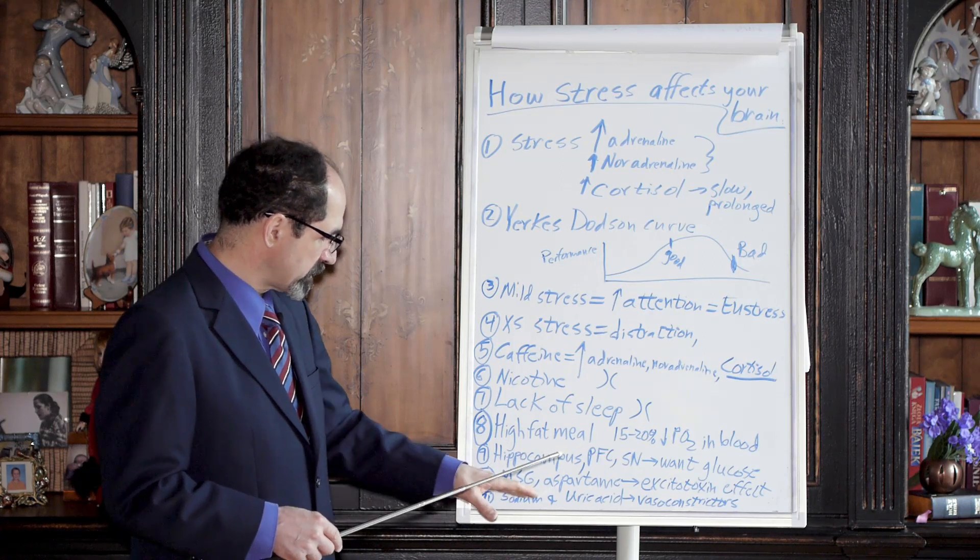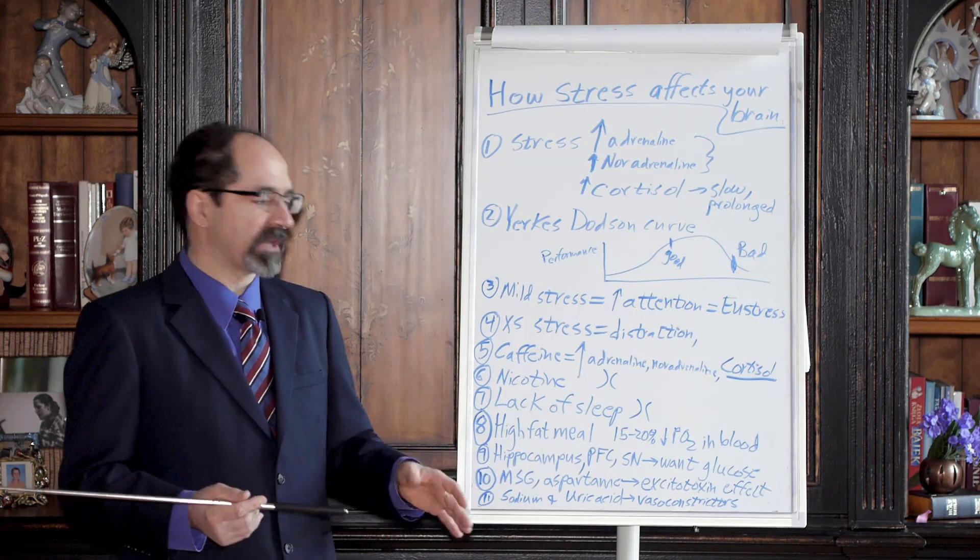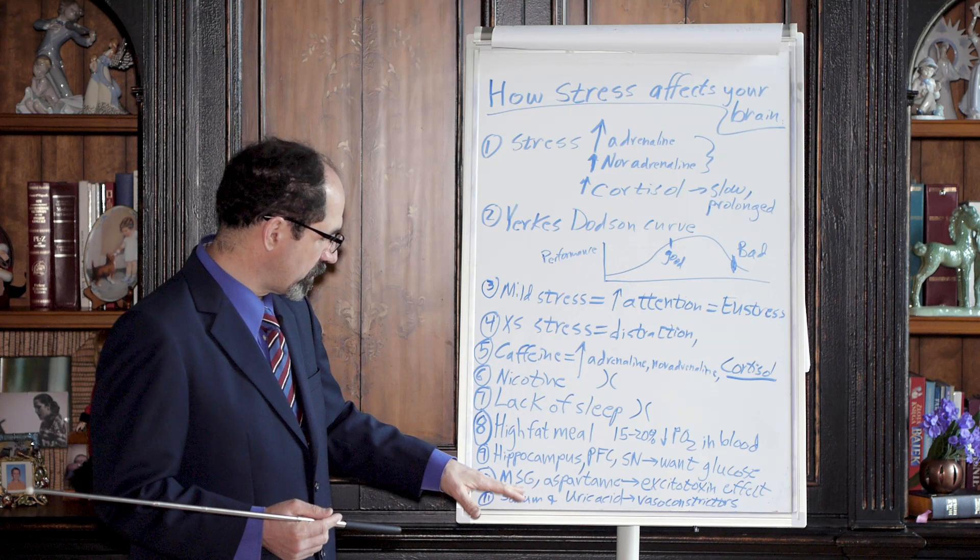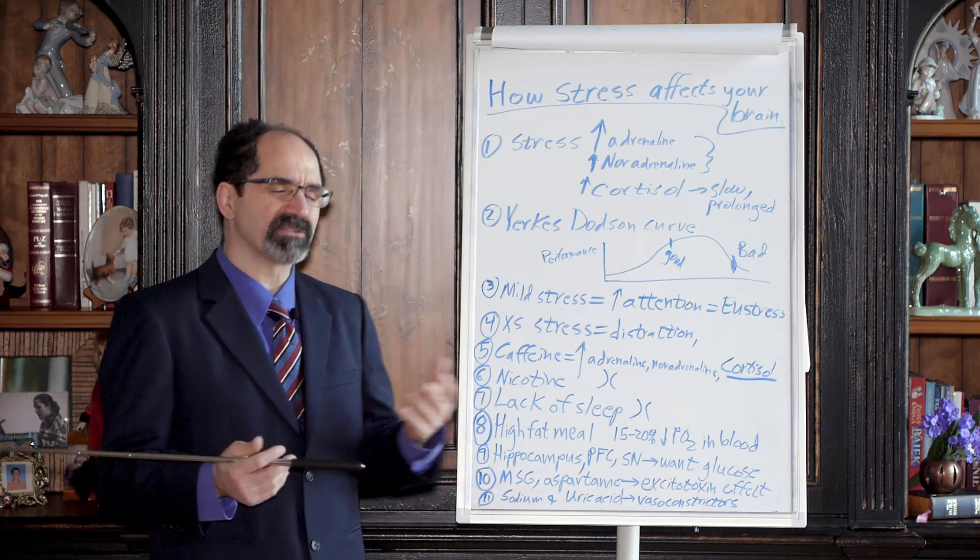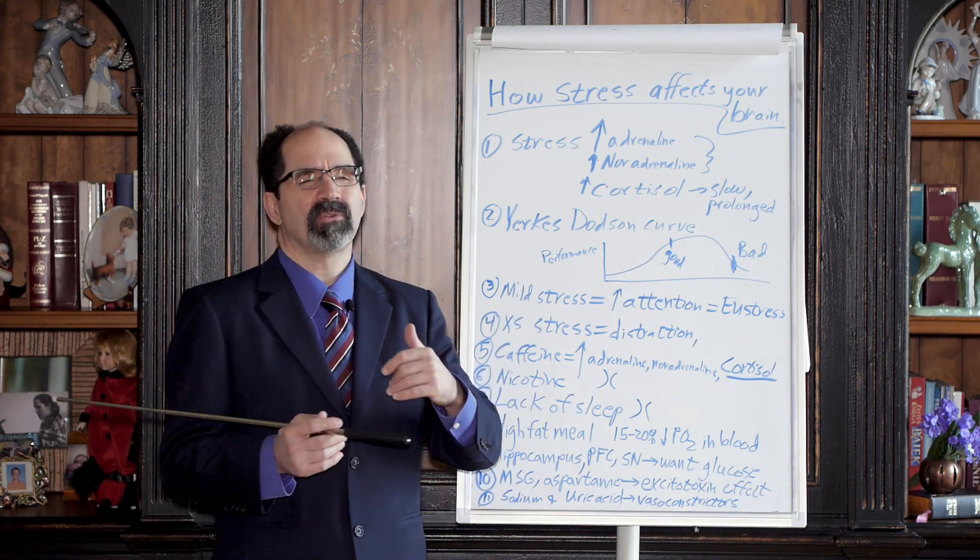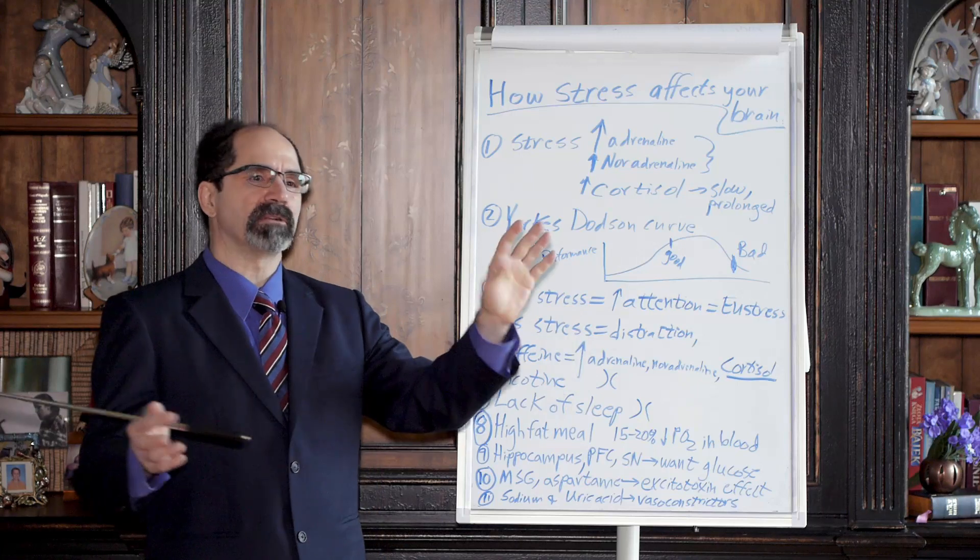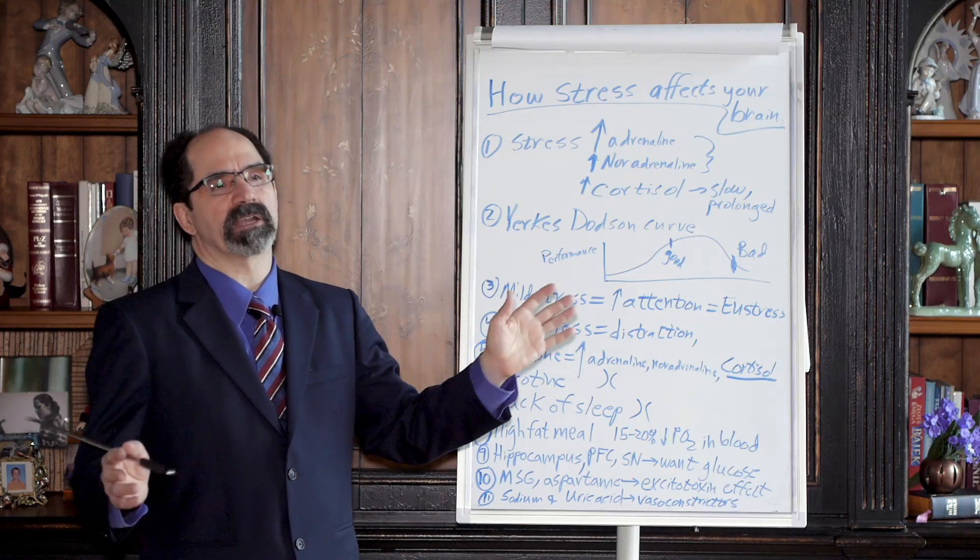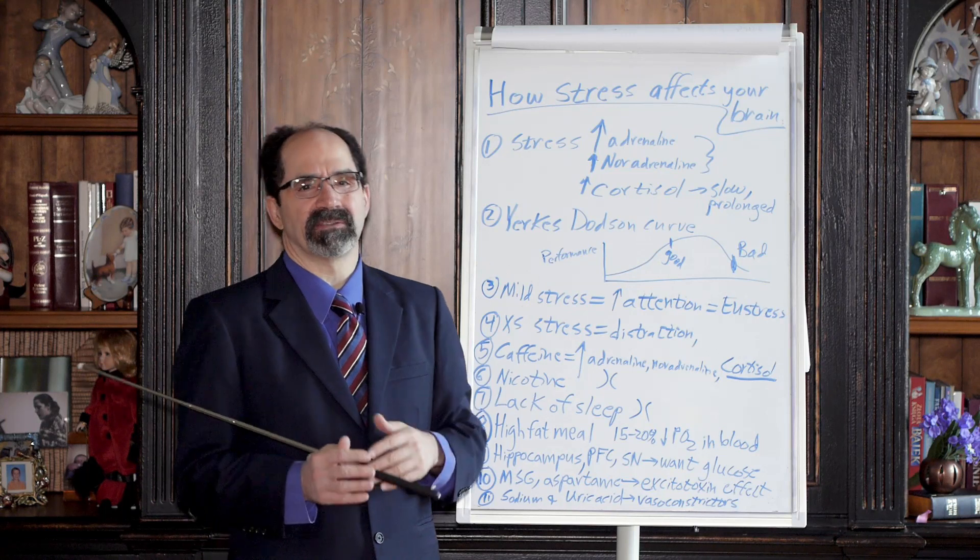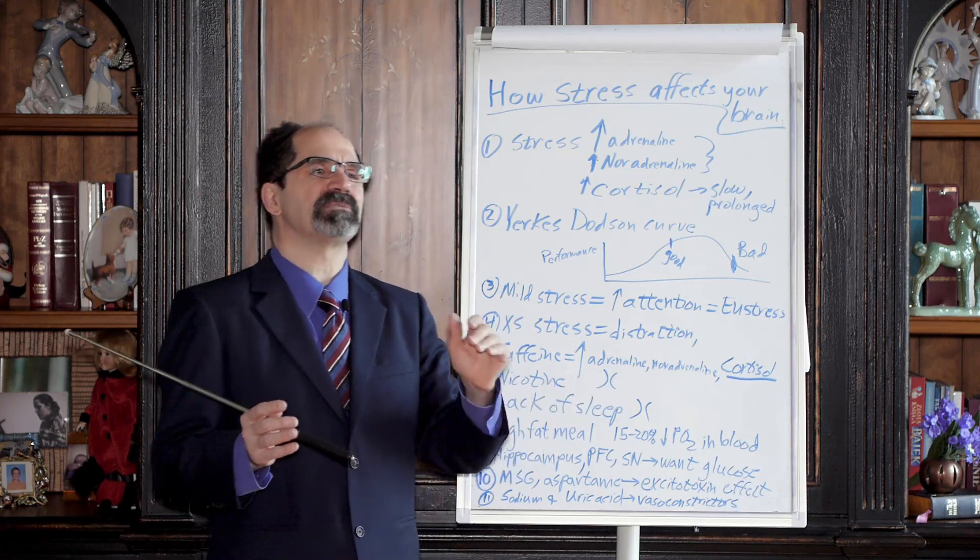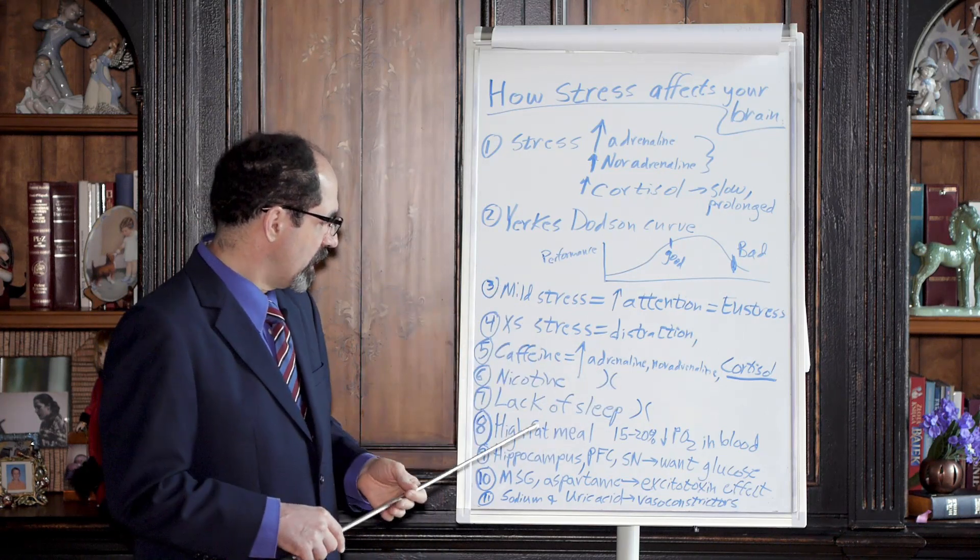Another thing people do that makes it worse: they'll ingest some type of excitotoxin like aspartame sweetener or MSG, monosodium glutamate. We talked about that in another lecture. Quite often you'll see it in foodstuff as barley malt extract, barley extract, malt extract. Watch out for natural flavors too. Whenever you see natural flavors, don't buy it. That just means it's something bad they're not going to tell you what it is.